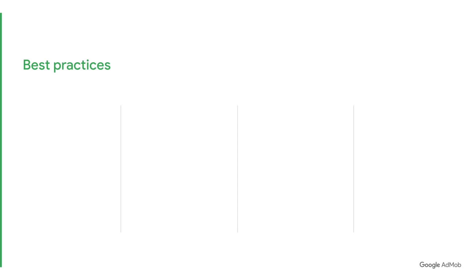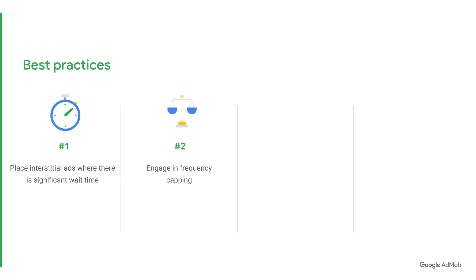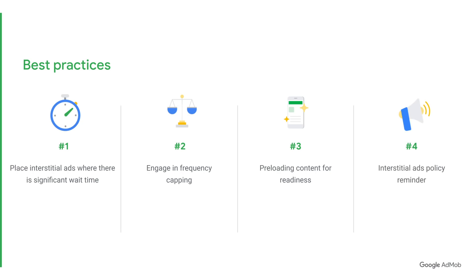Before diving into the best practices for interstitial ads, here is the agenda for today. We'll be going through four best practices. The first is to place interstitial ads at any point in time where there is significant wait time. Next, we have frequency capping. Thirdly, we recommend preloading content for readiness. And last but not least, we'll cover interstitial ads policy as a reminder to ensure you get the most out of your interstitial ad experience.